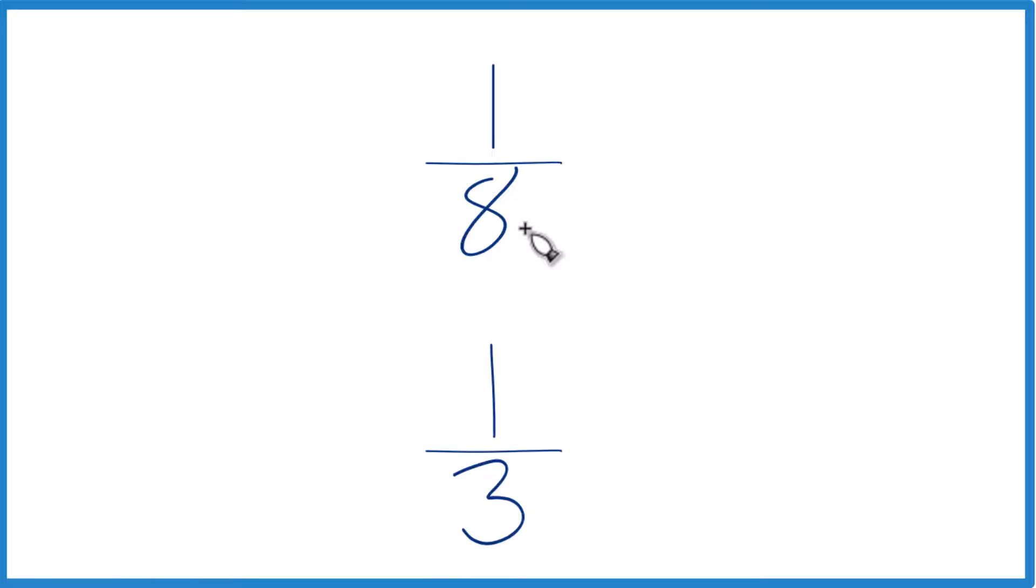You could also find a common denominator. So right now we have 8 and 3, but if we had a common denominator, something both of these went into evenly, then we could just compare the numerators. We'd figure out whether 1 eighth is greater than or less than 1 third.